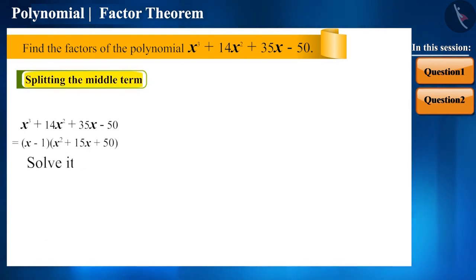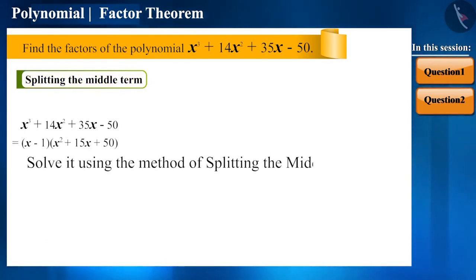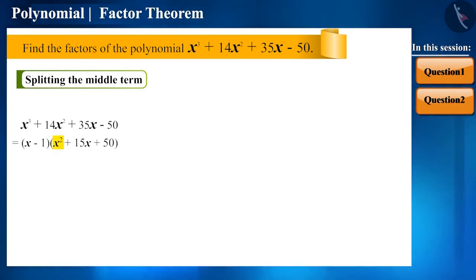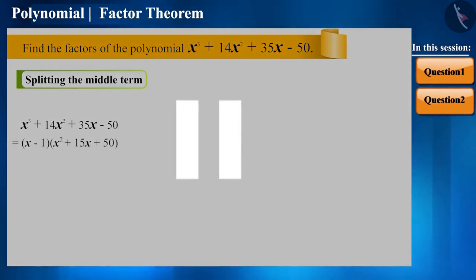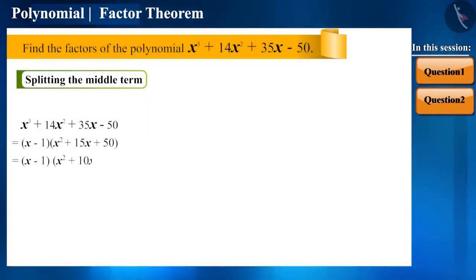This is in the form of a quadratic polynomial. Can we now solve it using the method of splitting the middle term? Yes. Here, the coefficient of x² is 1 and the coefficient of the constant term is 50. And the two terms whose product is 50 and the sum is the coefficient of the middle term, that is 15, are 10 and 5. Pause the video and solve it yourself and see if the other two factors that you are getting are the same or not.